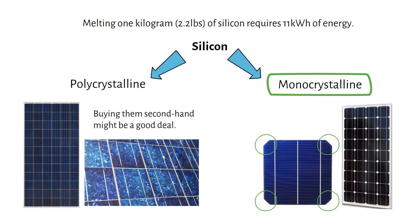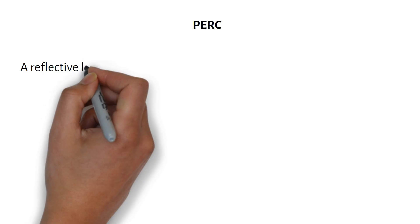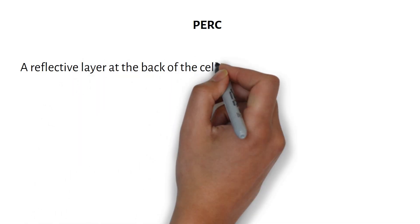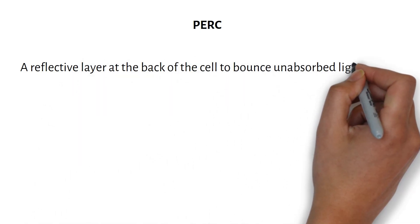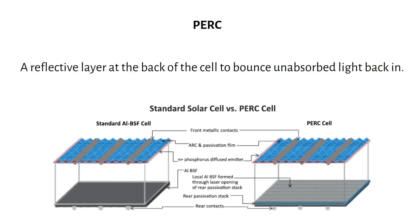Let's take a look at these new technologies. First, PERC or Passivated Emitter Rear Cell. This adds a reflective layer at the back of the cell to bounce unabsorbed light back in. On the left you can see a normal cell and on the right you have the PERC cell. You can see the added layer below the solar cell. PERC now makes up about 80% of all solar panels. So it's nothing new in 2025.